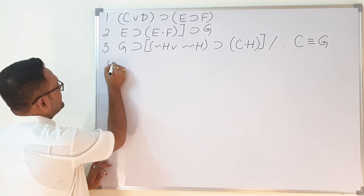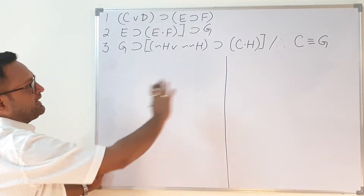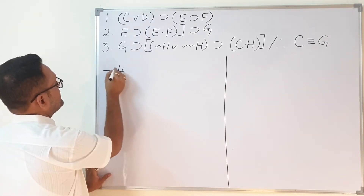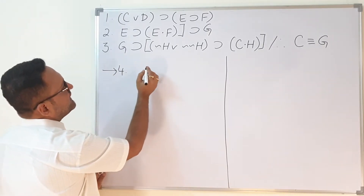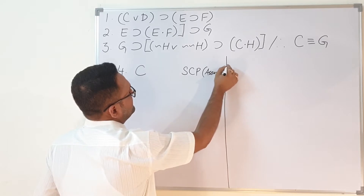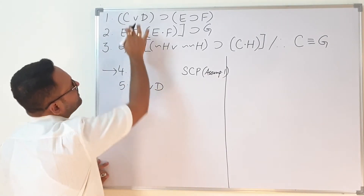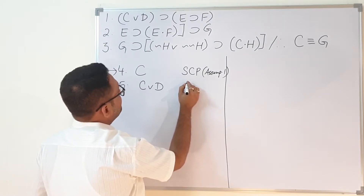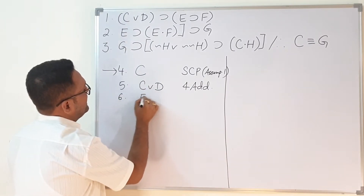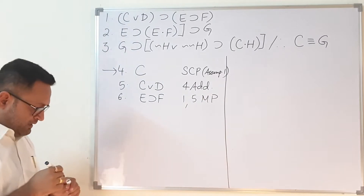Let us solve this question. I'll make a dividing line so we can work on both sides. On line number 4, I'm taking an assumption — C — as the SCP assumption. On line number 5, I will add D to it because I want to enter the first premise line; this is line 4 by addition. On line number 6, E implies F will come from lines 1 and 5 by modus ponens.